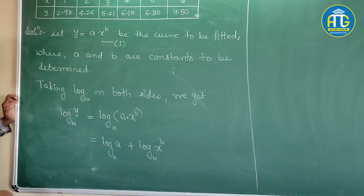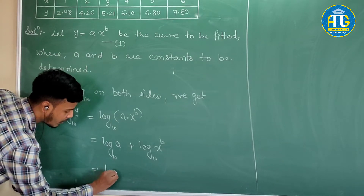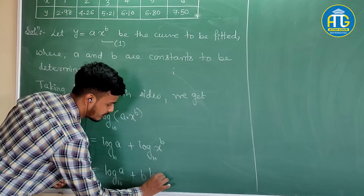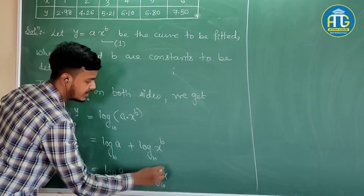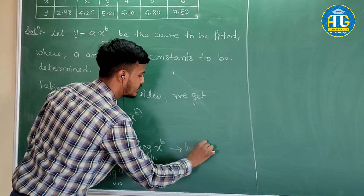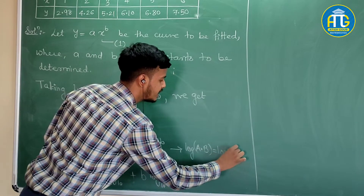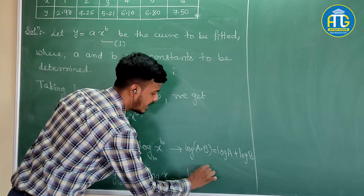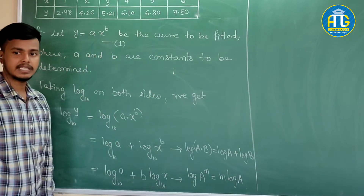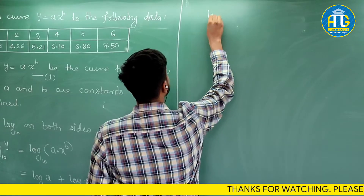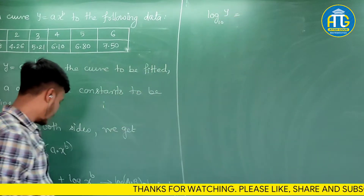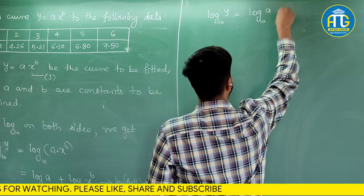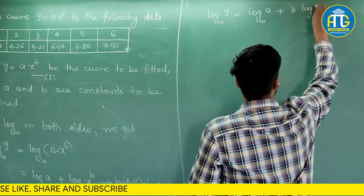Now, again apply the property of logarithm. It becomes log a to the base 10, plus b log x to the base 10. Here we have used the property log(a^m) = m·log a. So continuing, the left-hand side gives log y base 10 equals log a base 10 plus b·log x base 10.